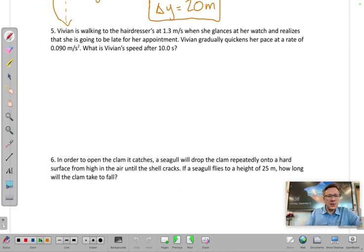It says that Vivian is walking to the hairdresser at 1.3 meters per second, so that's indicating her current velocity when she glances at her watch and realizes that she is going to be late for her appointment.